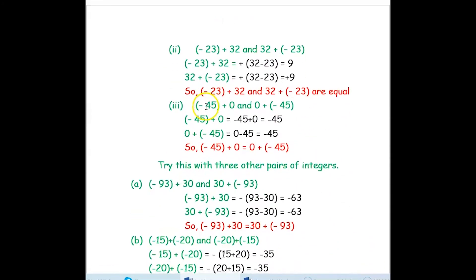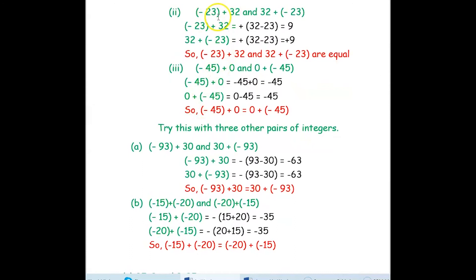Next example: negative 23 plus 32 and 32 plus negative 23. For negative 23 plus 32, the sign of the bigger number is plus, so we subtract: 32 minus 23 is 9, giving plus 9. In the other way, 32 plus negative 23 — same sign of the greater number, so 32 minus 23 is 9, giving plus 9. They are both equal.